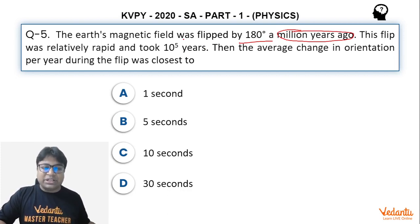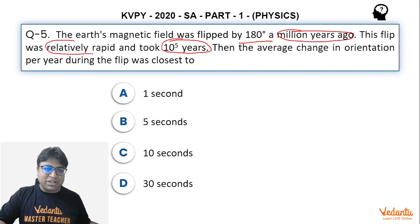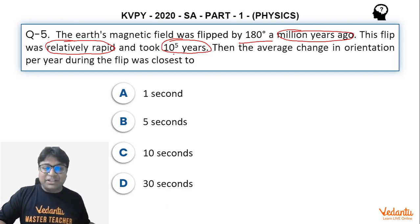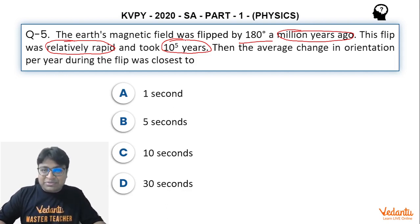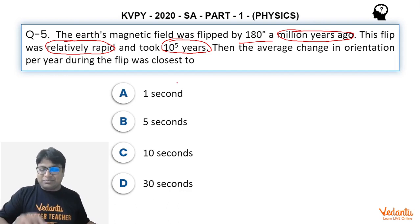This flip took place in about 10^5 years. The question uses the word 'relatively rapid' because, compared to our lifetime, 10^5 years looks like an eternity — but on the timescale of Earth's existence, this period is just a moment, a very small interval.